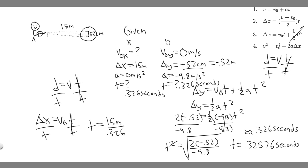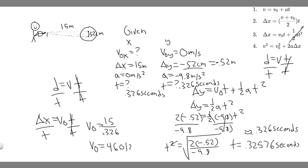Calculating 15 / 0.326 gives approximately 46.012, which we round to 46 meters per second. So the initial speed of the arrow is v₀ ≈ 46 m/s. If you use the more exact value of t you may get a slightly different result, but the answer is approximately 46 meters per second.